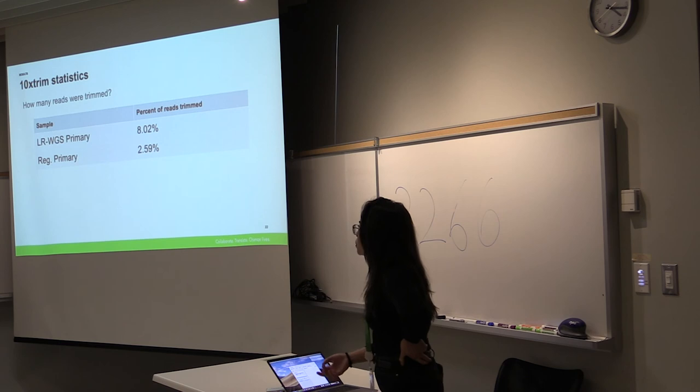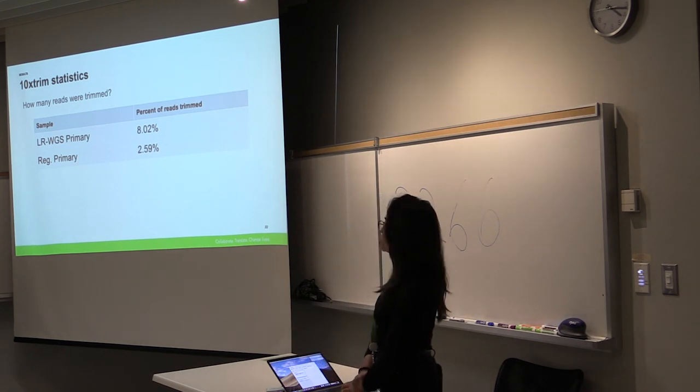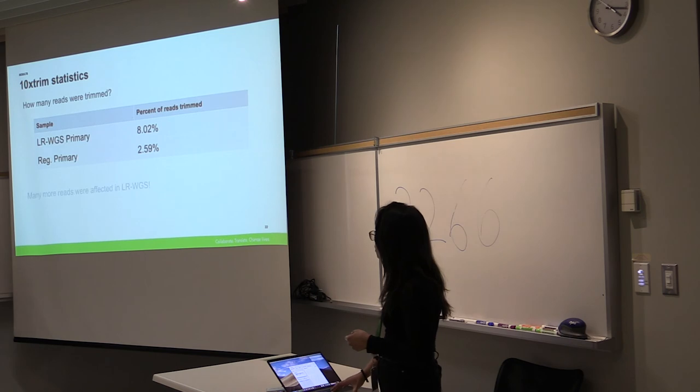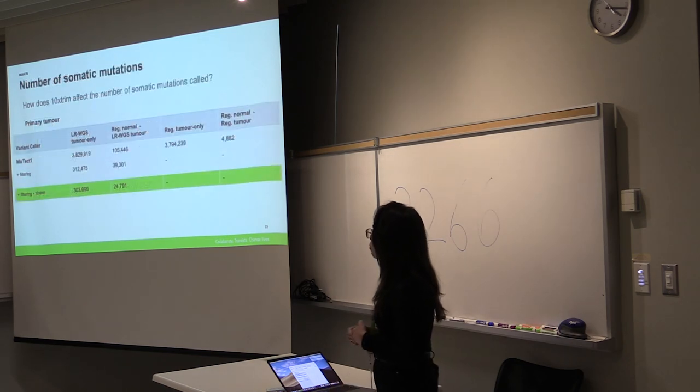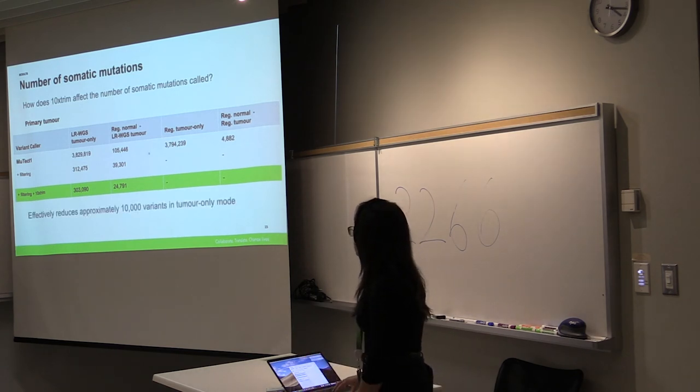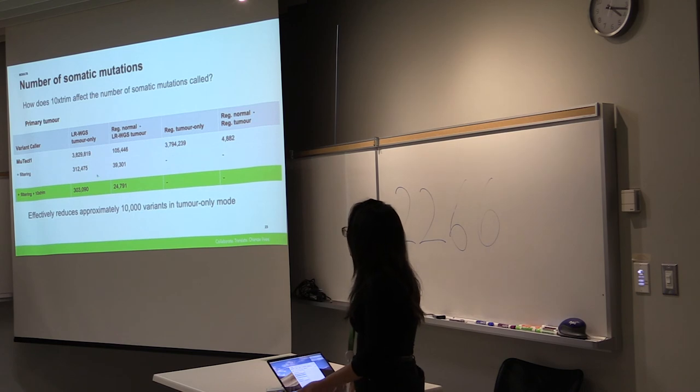And so how many reads were trimmed was the next question. And so we found that about 8% of the reads seem to be trimmed, which is much higher than when we look at the regular samples. We also tried to see how this affected somatic mutation calling. And so what we found after trimming was there was about a 10,000 difference when we applied 10X trim.